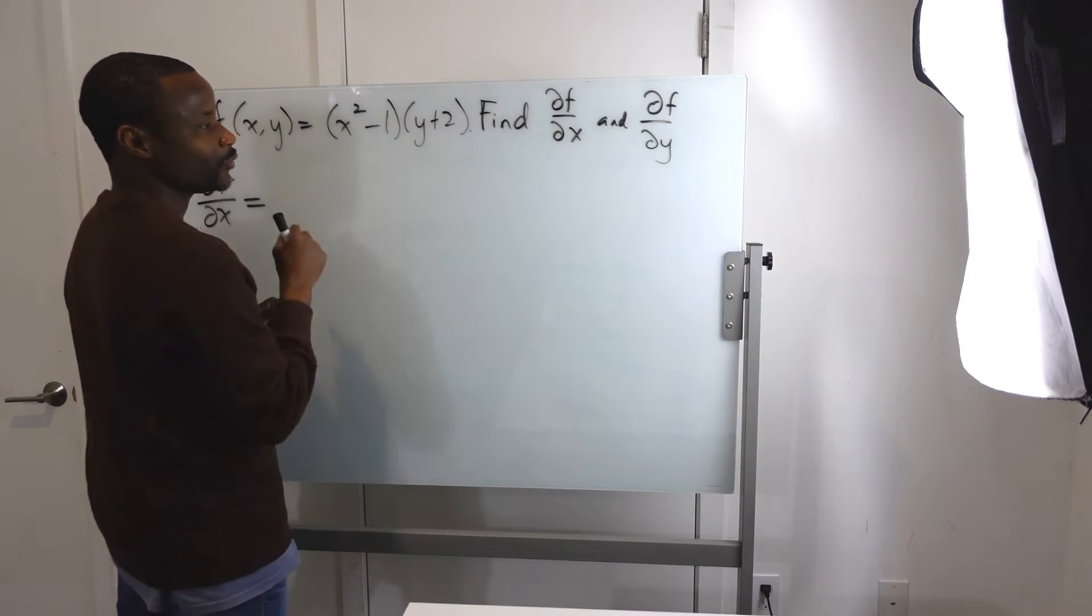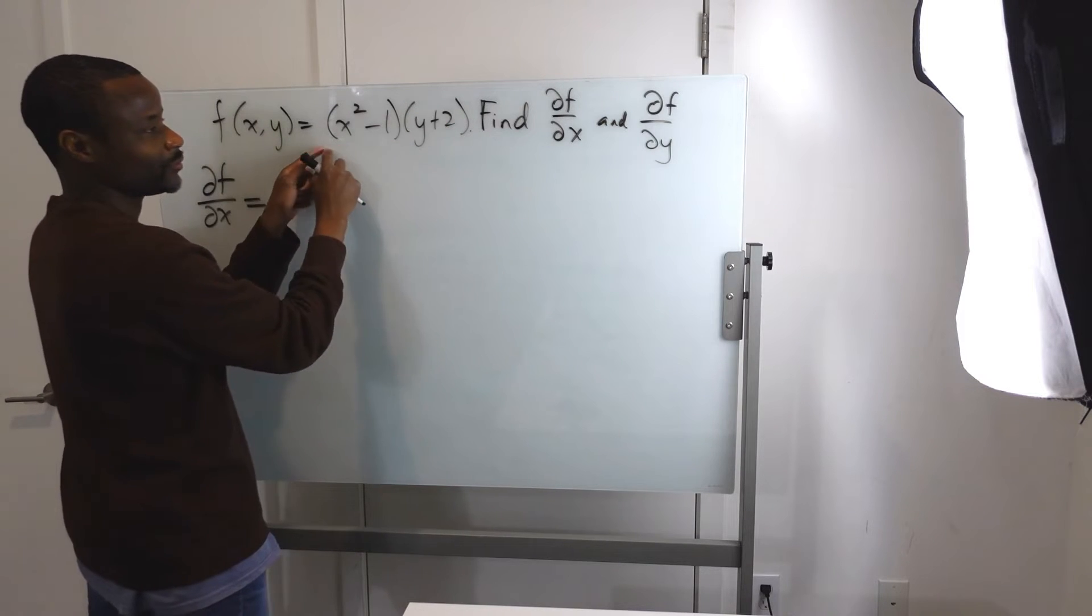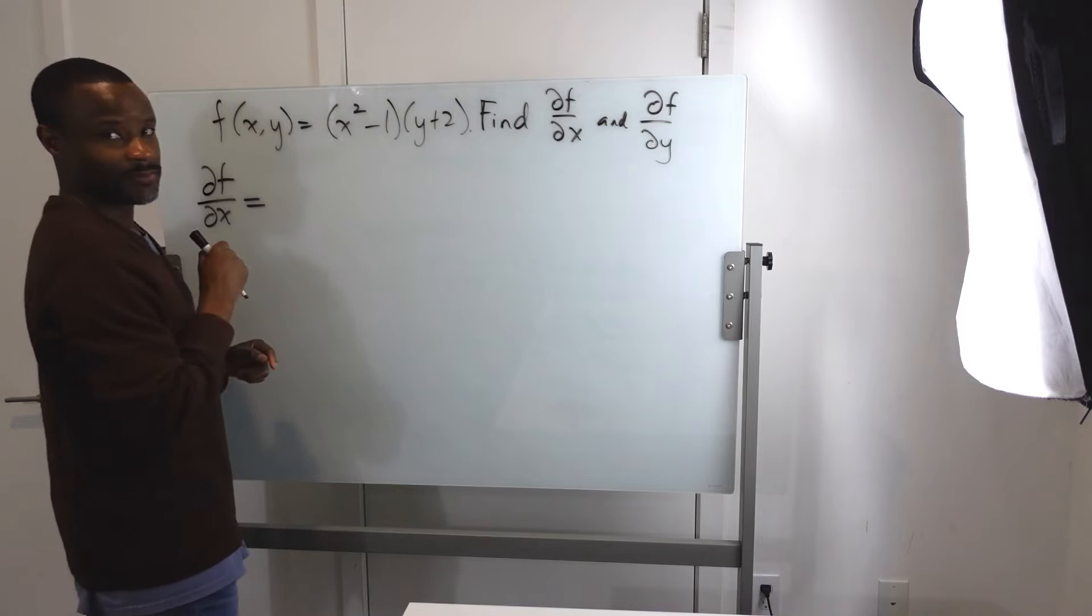you treat y as constant and worry only about the x. So if that were a constant, what do we do? Well, remember the rule: pull it out and worry only about the derivative of whatever term has that x.